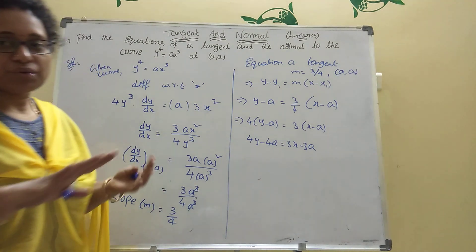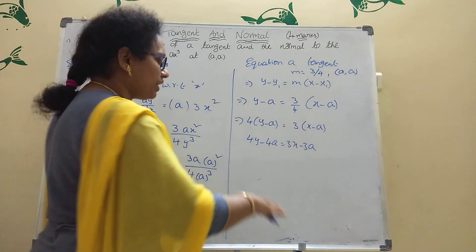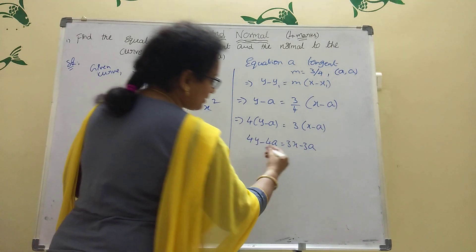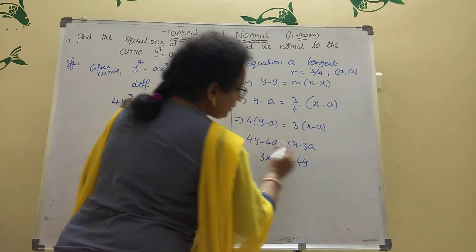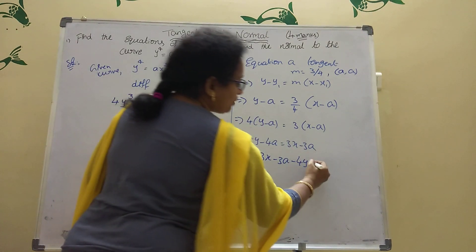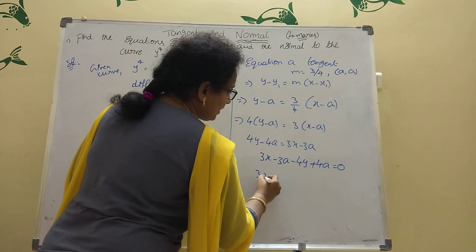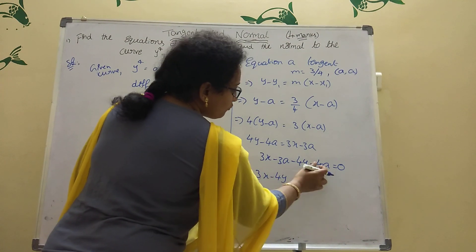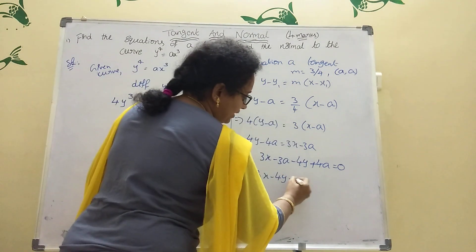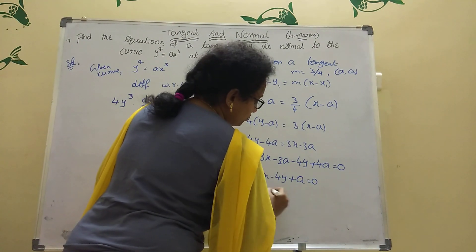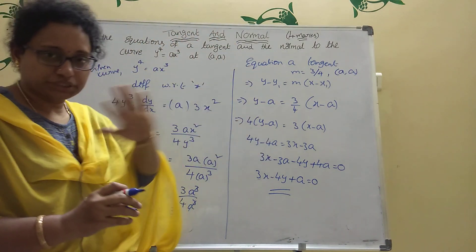Rearranging to general form ax + by + c = 0: send terms to one side. 3x - 4y - 3a + 4a becomes... wait, 3x - 4y - (4a - 3a) = 0, giving 3x - 4y - a = 0. This is the equation of the tangent.